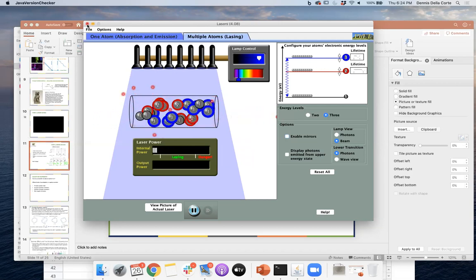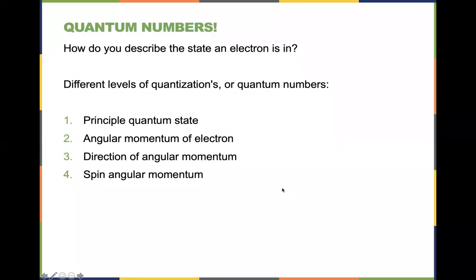Now let's go into the last topic for today: quantum numbers. We've learned a lot about electrons, and it's important to describe the state they're in accurately. The 'zip code' of an electron requires four quantum numbers: the principal quantum number, which states how much energy is involved; the angular momentum quantum number — Bohr proposed its quantization to explain atomic spectra; the direction of angular momentum; and the spin. Understanding all four allows us to explain the chemistry model of the periodic table.